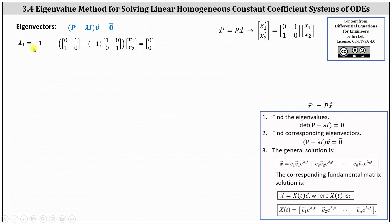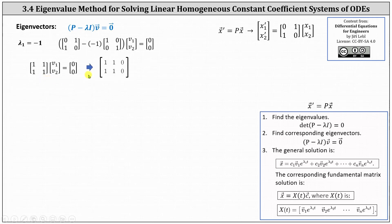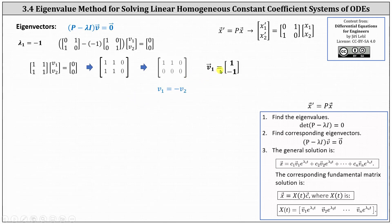For lambda sub one equals negative one, we have the determinant of matrix P minus lambda times the two by two identity matrix times vector v equals a zero vector. Simplifying inside the parentheses, the result is the two by two matrix with entries all equal to one. This is a dependent system with an infinite number of solutions. Writing the augmented matrix in reduced row echelon form, row one indicates v one plus v two equals zero, or v one equals negative v two, and v two is a free variable. Letting v two equal negative one, v one equals positive one, giving us eigenvector v one equals the vector [1, -1].